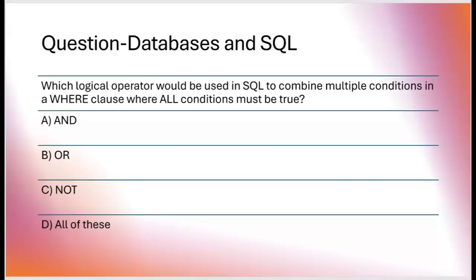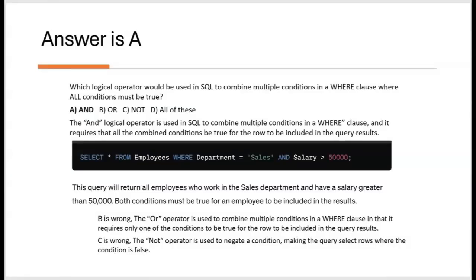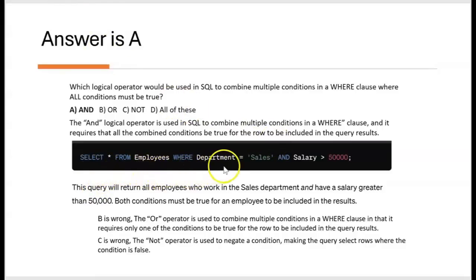Let's start with a question on databases and SQL. Which logical operator would be used in SQL to combine multiple conditions in a WHERE clause where all conditions must be true? The answer is A: AND. The AND logical operator requires that all combined conditions be true for the row to be included in the query result. For example: SELECT FROM employee table WHERE department equals 'Sales' AND salary is greater than fifty thousand.